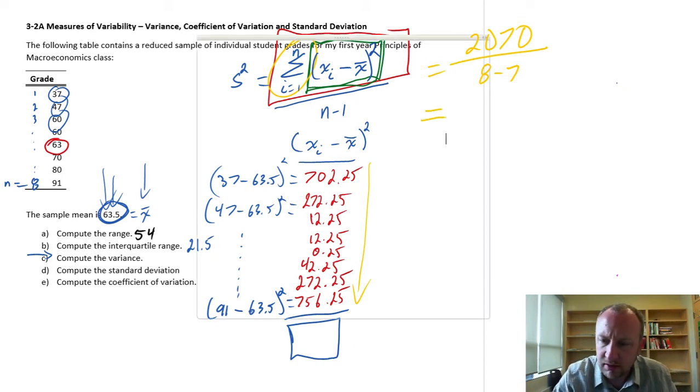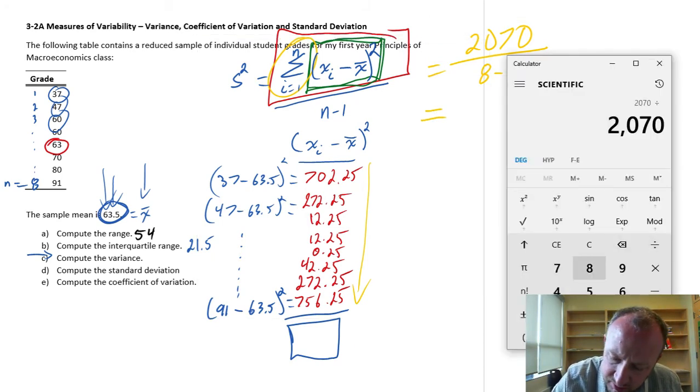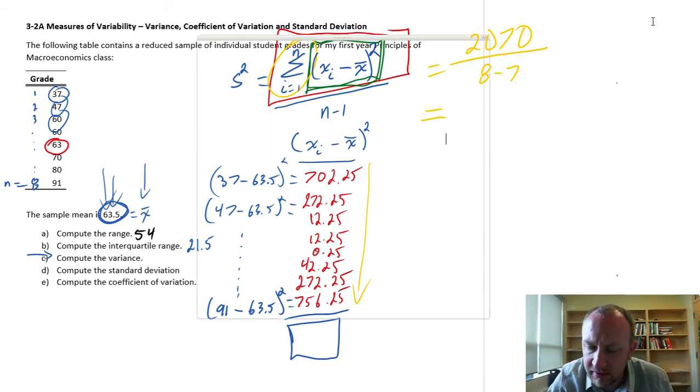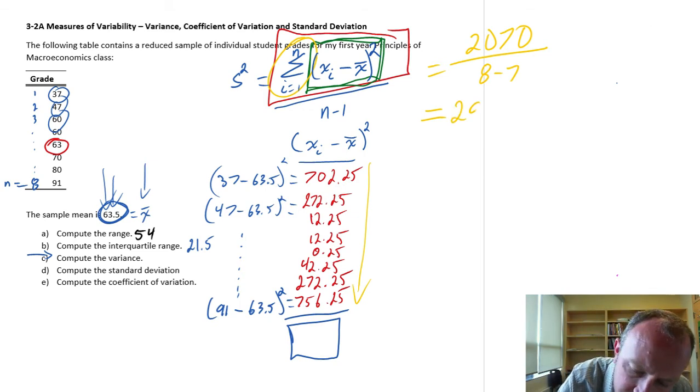So now let's divide this by 7. And there's my variance. 295.7. There we go. Done.